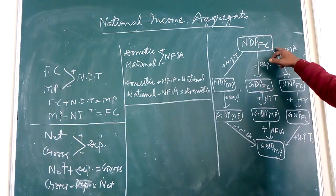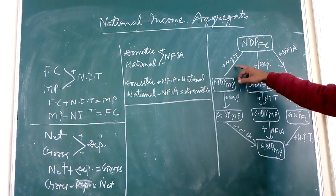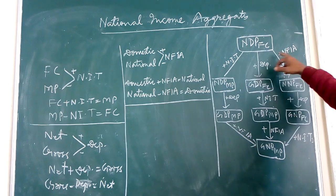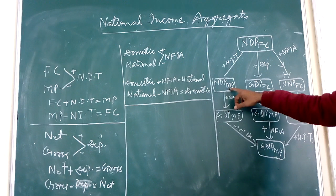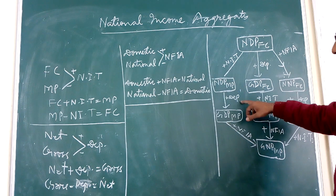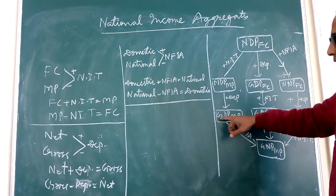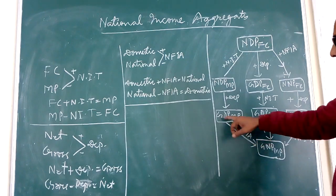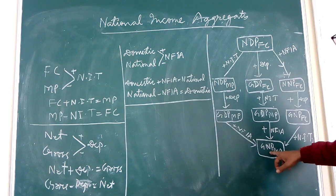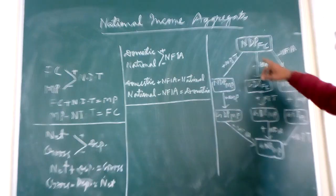Now coming to here. In NDP, when we add NIT, depreciation and NFIA. NIT this factor cost gets converted into market price. When we add depreciation in that, this net gets converted into gross. And when we add NFIA, this domestic gets converted into GNP.